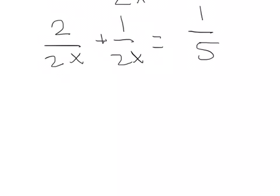Then what we have to do is we have to add both the two X's together. So we have three over two X equals one-fifth.